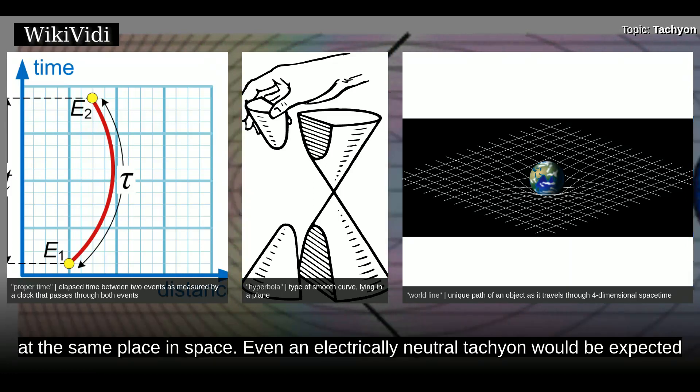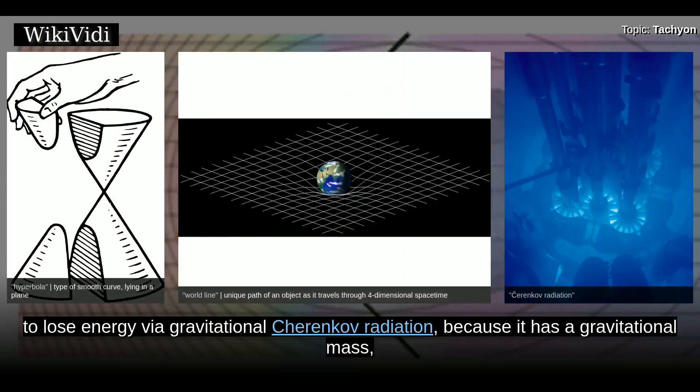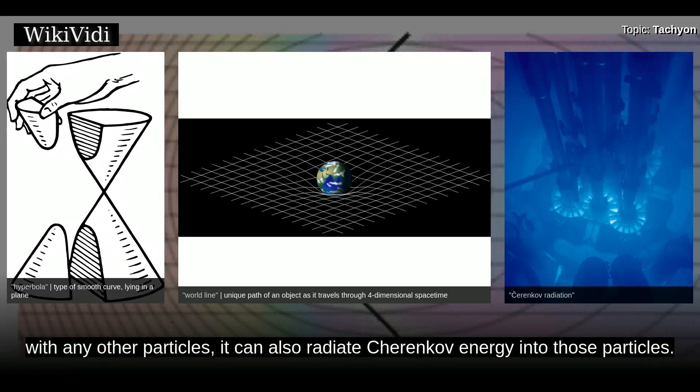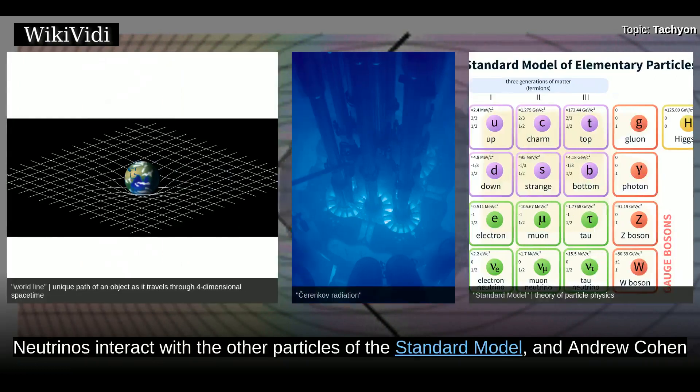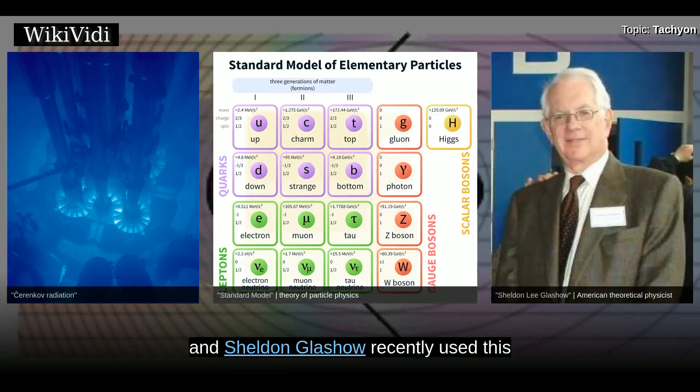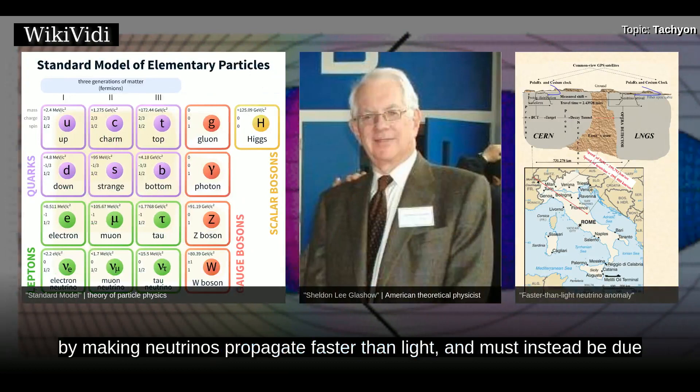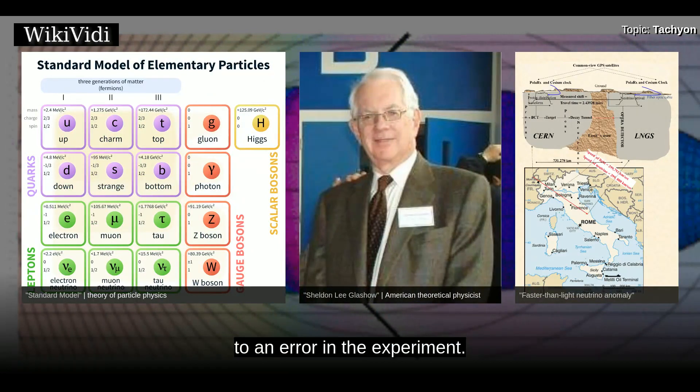Even an electrically neutral tachyon would be expected to lose energy via gravitational Cherenkov radiation because it has a gravitational mass, and therefore increase in speed as it travels, as described above. If the tachyon interacts with any other particles, it can also radiate Cherenkov energy into those particles. Neutrinos interact with the other particles of the standard model, and Andrew Cohen and Sheldon Glashow recently used this to argue that the faster-than-light neutrino anomaly cannot be explained by making neutrinos propagate faster than light and must instead be due to an error in the experiment.